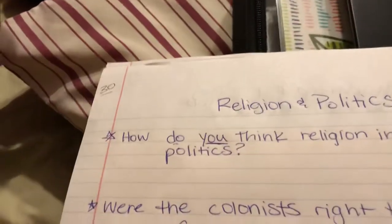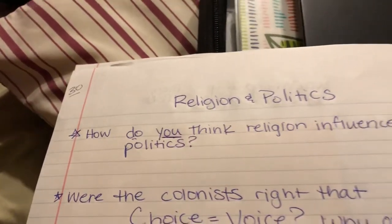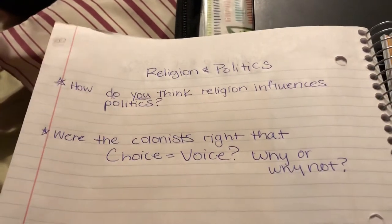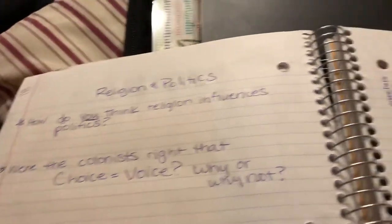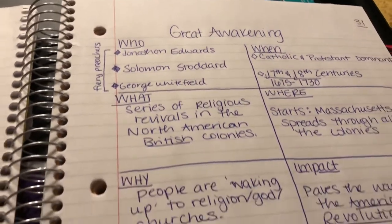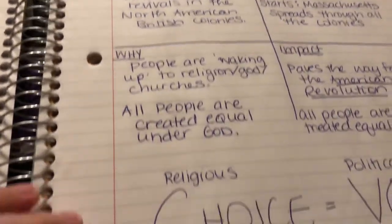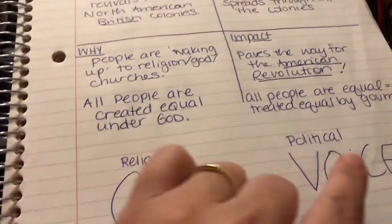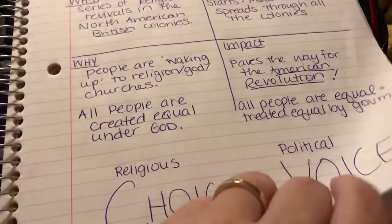Then we started talking about the influence of religion on politics, taking us into the Great Awakening and discussing this religious movement that had a political effect in the 1600s and 1700s. Page 32 is blank right now — we'll add something in there tomorrow.